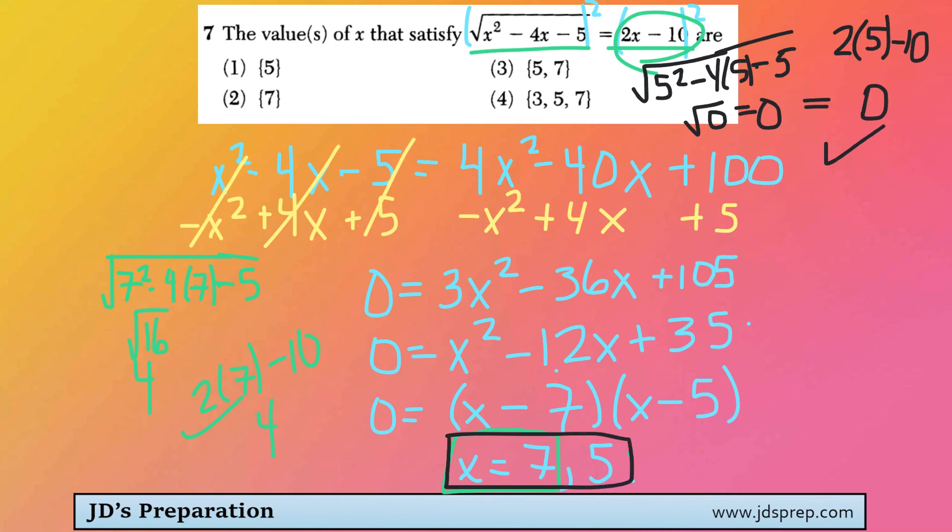So x equaling 5 and 7 is the correct answer, which is the third choice. All right, that's all for this video. Thanks for visiting JD's Preparation.